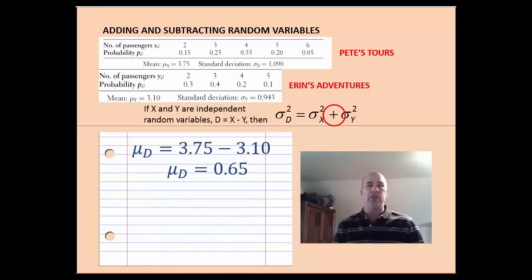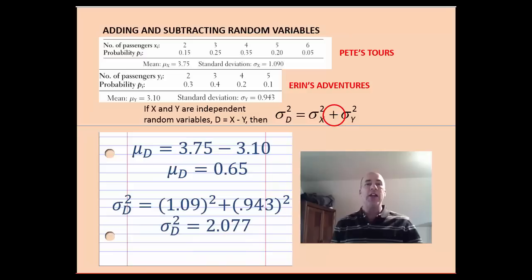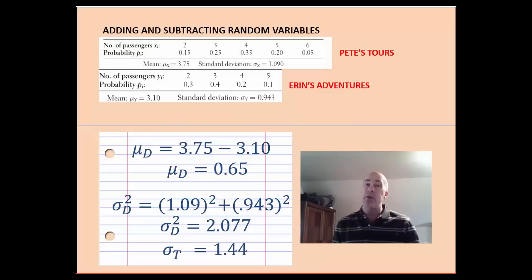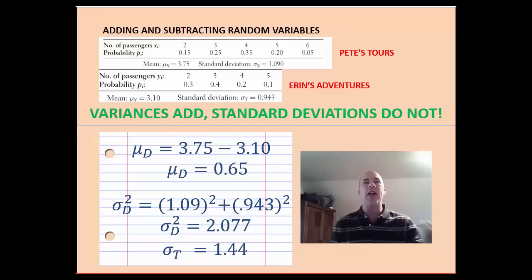Let's take a look at the difference between Pete's Tours and Erin's Adventures. First of all, I can subtract their means from each other. 3.75 minus 3.10 means, on average, Pete's Tours has 0.65 more passengers than Erin's Adventures. And next, their standard deviations, we're going to add the variances together, 1.09 squared, just like we did in the last example. We take the square root of that, we still get 1.44. So, we have the same standard deviation as we had before, because variances add. So, the main thing to remember here, and one of the big ideas for this section, is that variances add, standard deviations do not, and variances add under any situation, whether you're adding distributions or you're subtracting distributions.